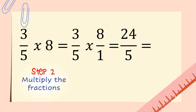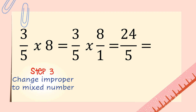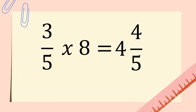Since our answer is an improper fraction, therefore we need to change it into a mixed number. You can watch the video about addition and subtraction of fractions, where I showed how to change an improper fraction to a mixed number. The answer for three-fifths times eight is four and four-fifths.